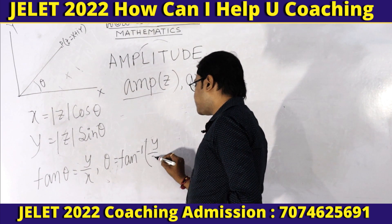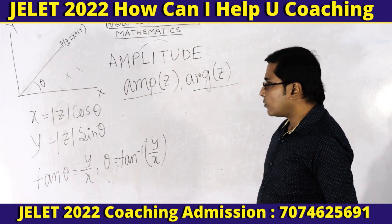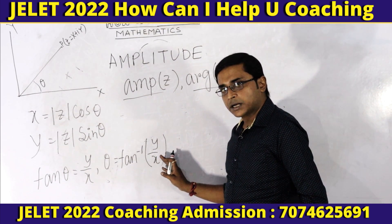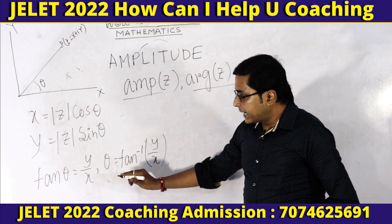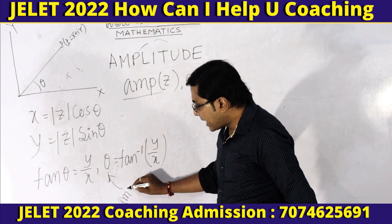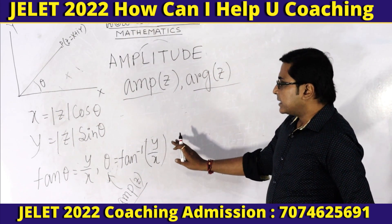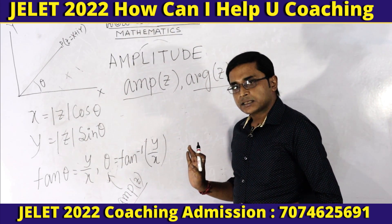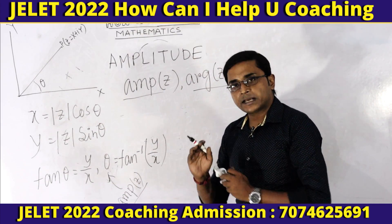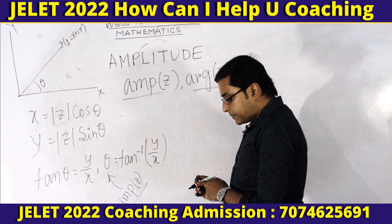Theta: always, cos theta and the angle. Theta equals tan inverse of y by x. That is, theta equals tan inverse of imaginary number divided by real number. This theta is the amplitude: amp z equals theta equals tan inverse of y over x.